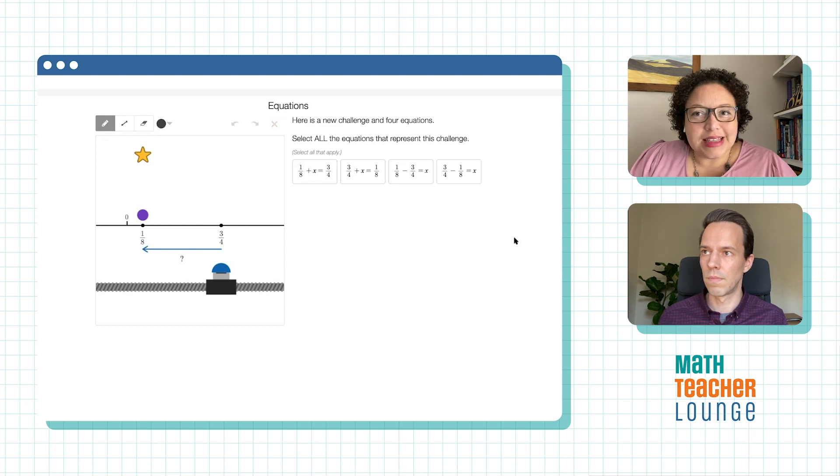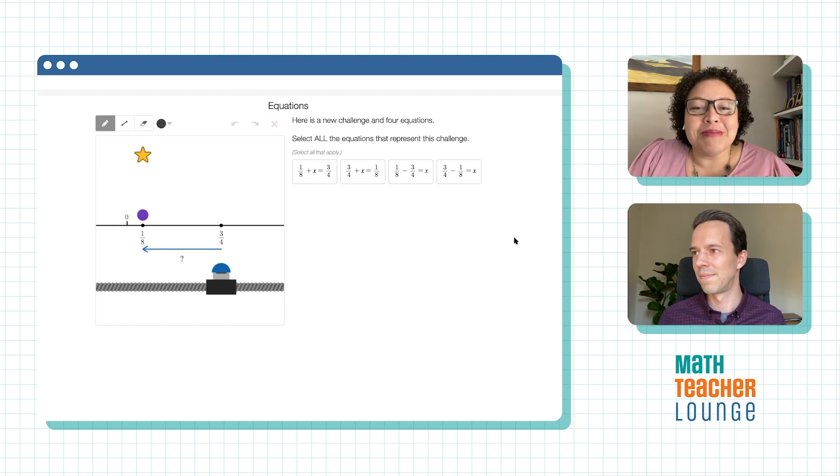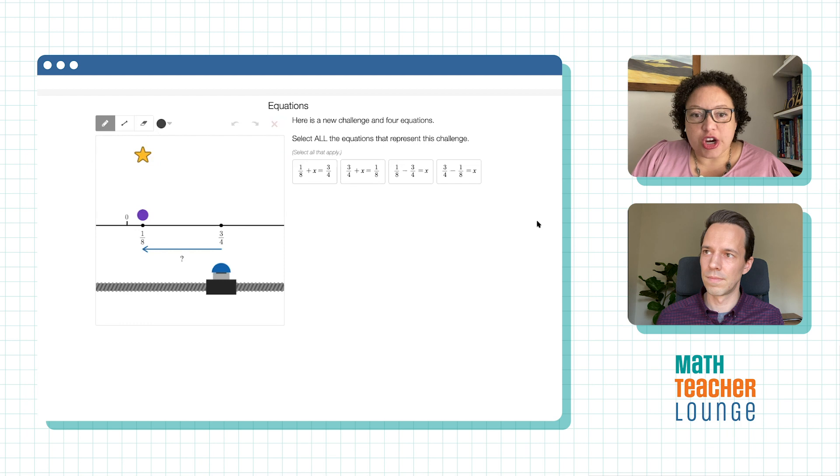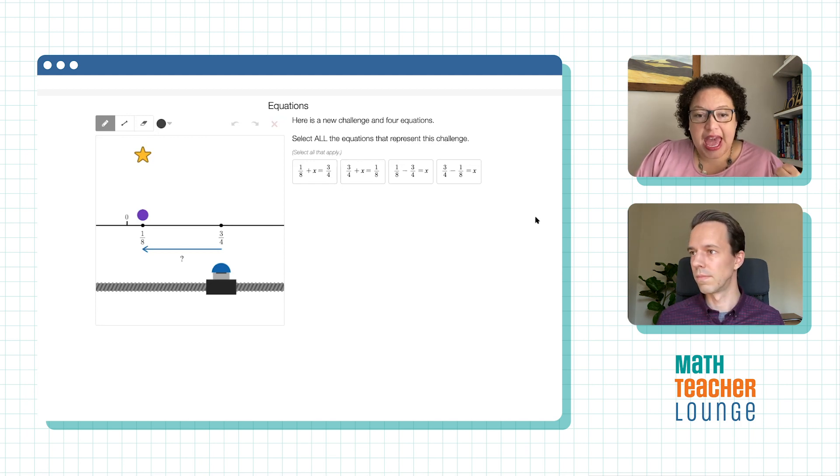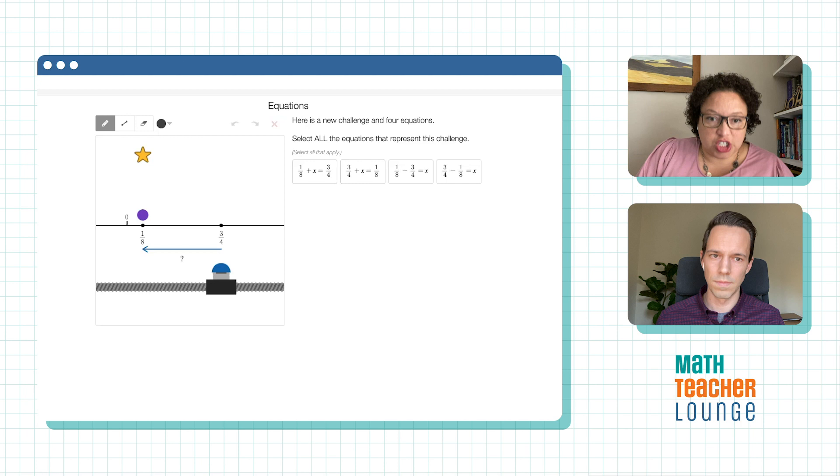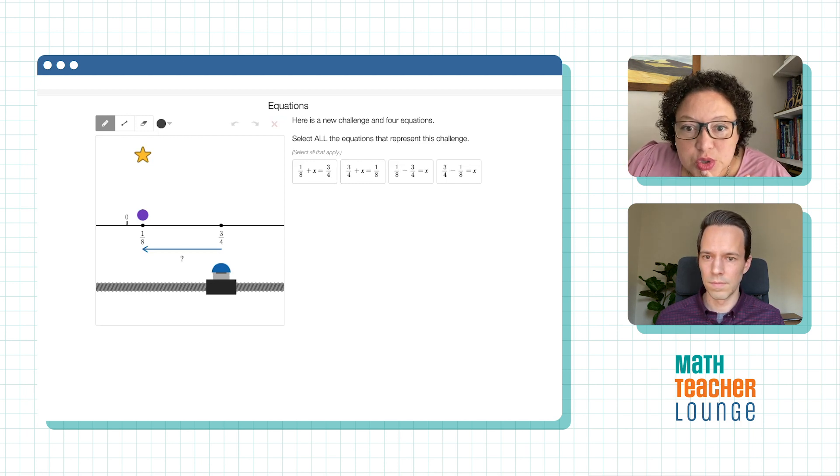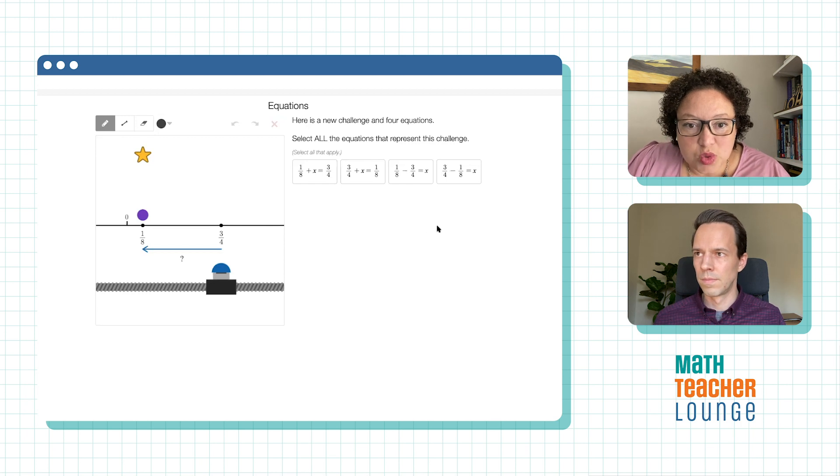First, I want to say that the star, the action, getting the star was very satisfying. And I'm appreciating that there are so many different things that I can attend to when I'm looking at. And so I'm looking now, I'm saying, I'm noticing where the arrow is going, and I'm trying to figure out, okay, how am I going to get it to move in the negative direction?